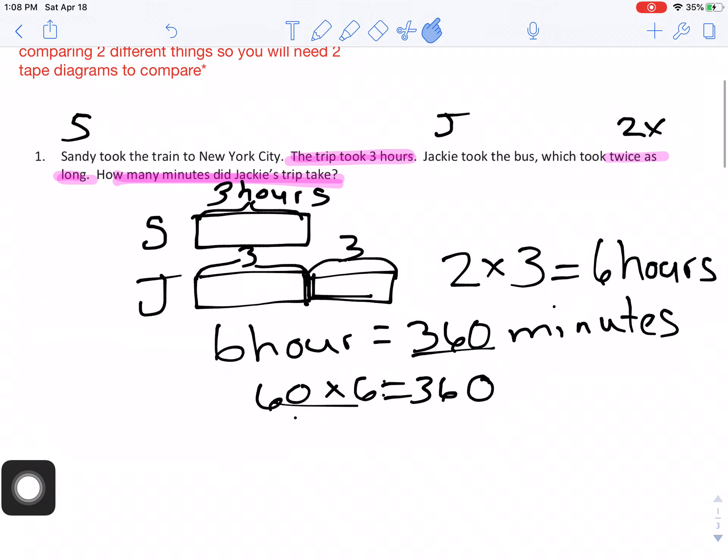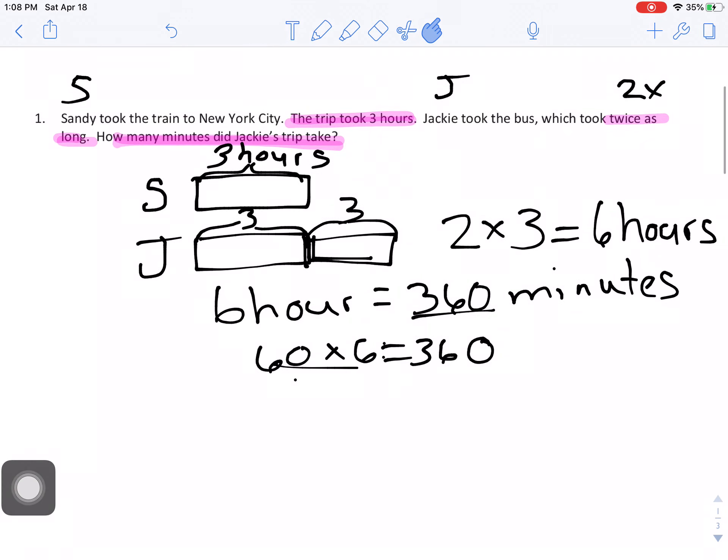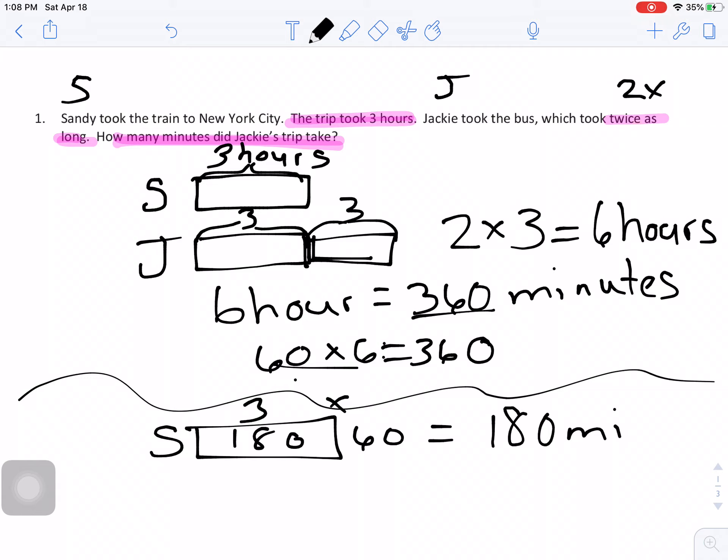Another way I could have solved this is I could have figured out how many minutes Sandy's trip was, and then do two times that many. So I could have done Sandy's trip was three hours. And then I said three hours times 60 minutes. And I know that six times three is 18. So Sandy's equals 180 minutes. And then just did two times as many. Added 180 or two times 180.